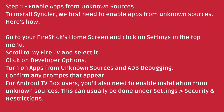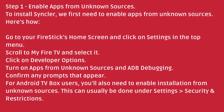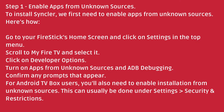Step 1: Enable apps from unknown sources. To install Sinclair, we first need to enable apps from unknown sources. Go to your Firestick's home screen and click on Settings in the top menu. Scroll to My Fire TV and select it. Click on Developer Options. Turn on apps from unknown sources and ADB debugging, and confirm any prompts that appear. For Android TV box users, you'll also need to enable installation from unknown sources, which can usually be done under Settings > Security and Restrictions.